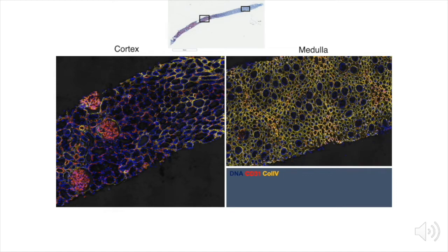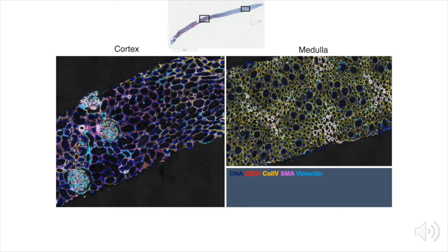By showing collagen IV in yellow, you can appreciate the striking differences in collagen content between cortex and medulla, which are also apparent on the trichrome image shown above. Here I am adding smooth muscle actin to highlight vasculature, as well as vimentin, which marks stromal cell populations, and WT1 in white, which marks podocytes.